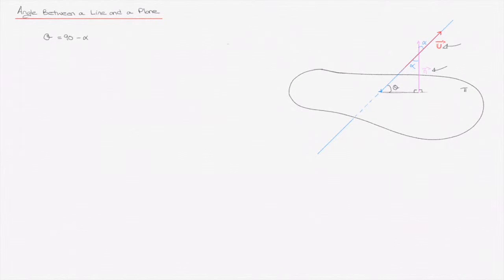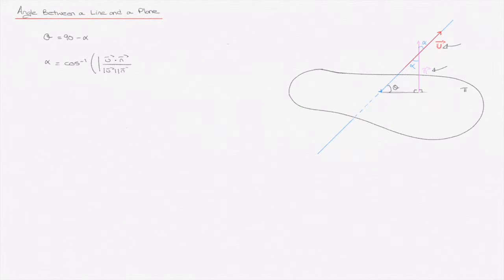This means that so long as we can find alpha, we can calculate theta. Looking carefully at the diagram, alpha is simply the angle between the two vectors u and n, and we know how to calculate the angle between two vectors — we've seen the formula for that previously. The formula is: alpha equals arc cos of the absolute value of u dot n, over the product of the magnitudes of u and n. We take the absolute value to ensure we obtain the acute angle between the two vectors, not the obtuse angle.